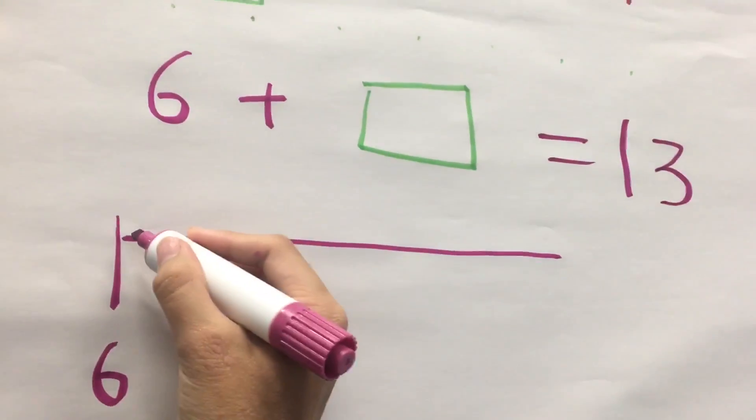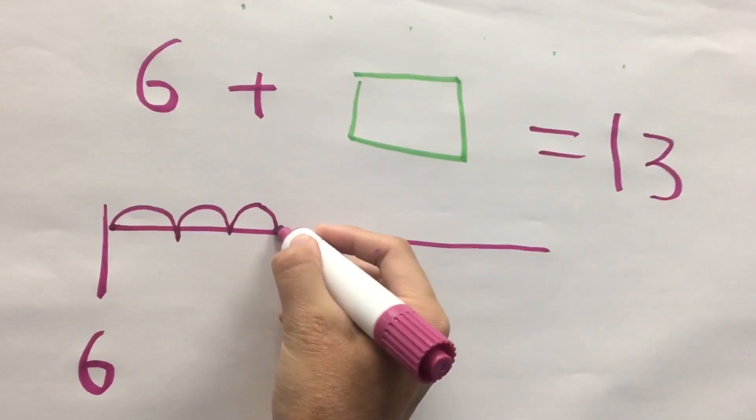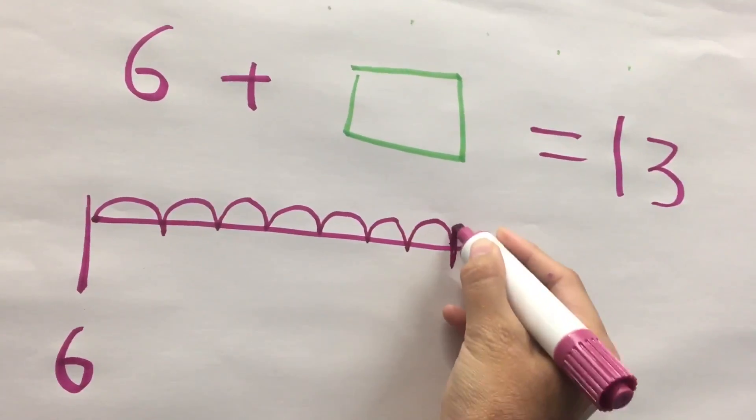So, 6, 7, 8, 9, 10, 11, 12, 13. And you're going to stop there.